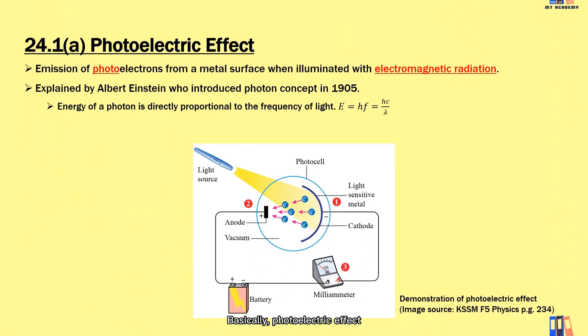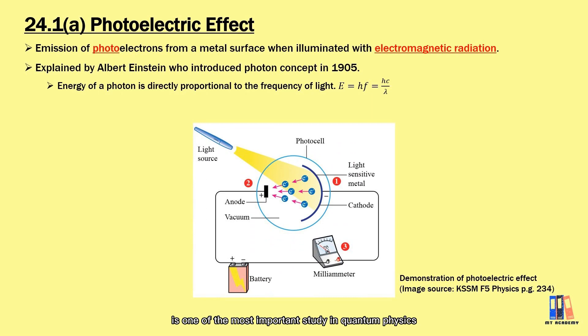Basically, photoelectric effect is one of the most important study in quantum physics. It is the emission of photoelectrons from a metal surface when illuminated with electromagnetic radiation. It is explained by Albert Einstein who introduced the photon, a discrete package of light energy. The energy of photon is given as E equal to hf or hc over lambda where h is the Planck constant.